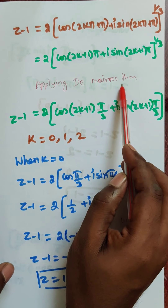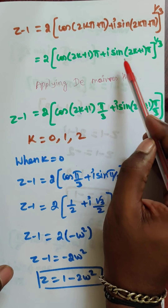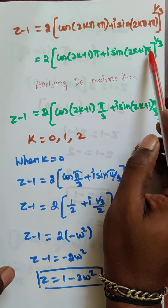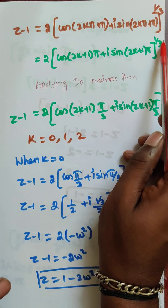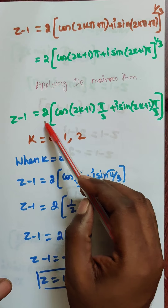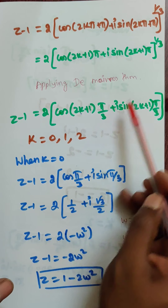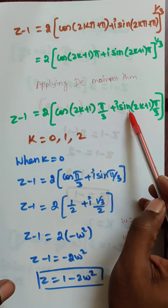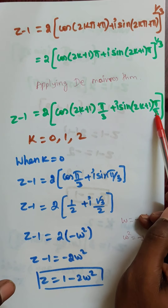So applying De Moivre's theorem — cos theta plus i sin theta, the whole to the power n, equals cos n theta plus i sin n theta — this n multiplies the angle. So we get z minus 1 equal to 2 into cos of 2k plus 1 into pi by 3 plus i sin of 2k plus 1 into pi by 3, where pi times 1 by 3 equals pi by 3.